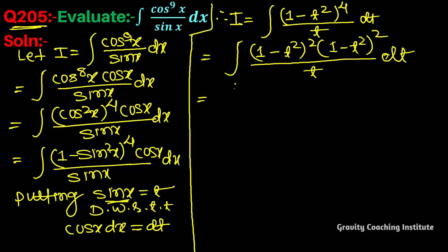Phir isko multiply karne se the numerator will be 1 minus 4 t square plus 6 t to the power 4 minus 4 t to the power 6 plus t to the power 8 upon t dt.